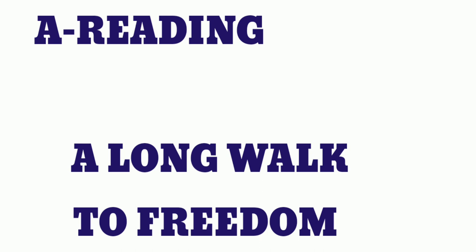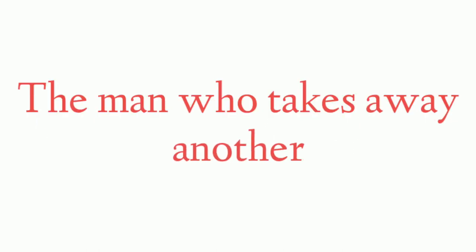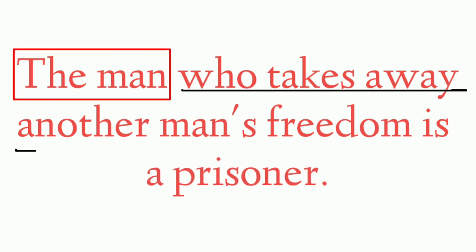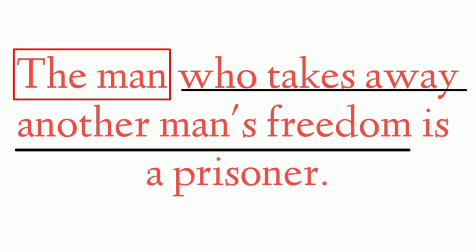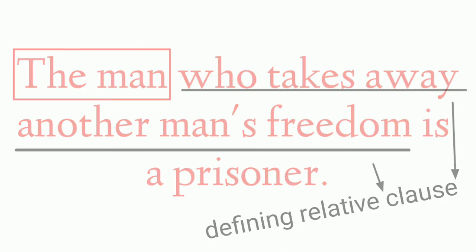Coming to the lesson 'A Long Walk to Freedom' in the grammar exercise, we can see the example: 'The man who takes away another man's freedom' — this is nothing but a defining relative clause. Here, a man is explained who is taking away the freedom; 'who' is the relative pronoun, and the complete sentence defines about the prisoner.